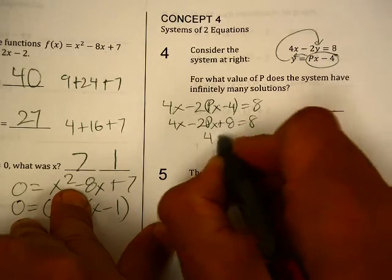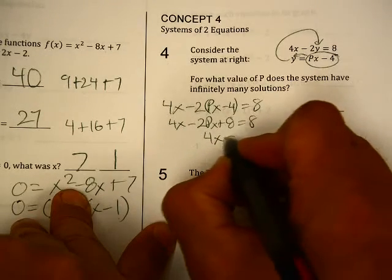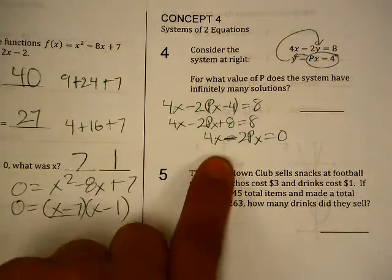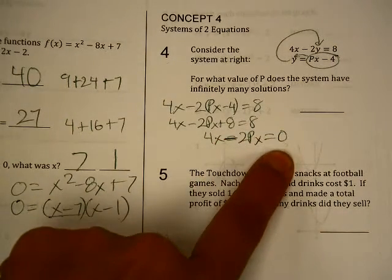Subtract 8 from both sides. 4x minus 2px equals 0.